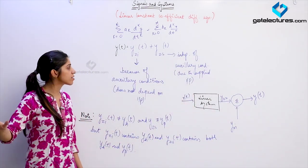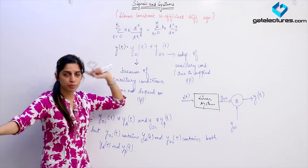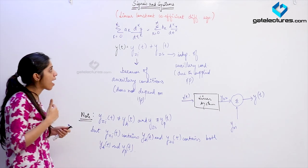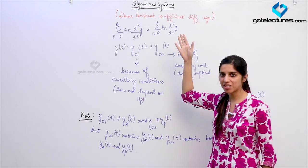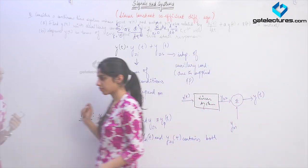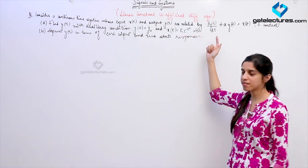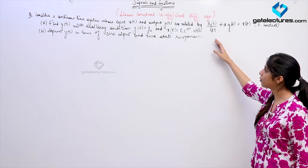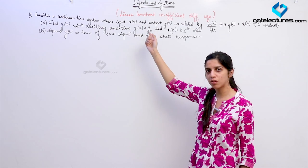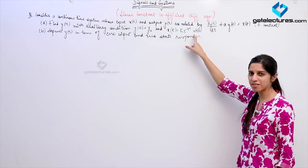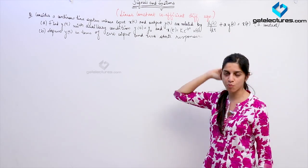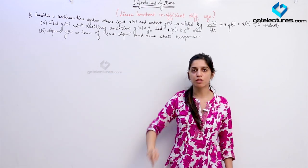For causality of the system, the system is not going to produce any output for any negative time instances. The system is going to be initially at rest — initial rest condition. Let us take a question and look at all the concepts using it. In this question, we are given a differential equation defining a system that relates the input and output. They have given the auxiliary condition y(0) = y₀, and the input contains u(t) meaning it is applied after t = 0. We need to find y(t) and express it in terms of zero-input and zero-state responses.